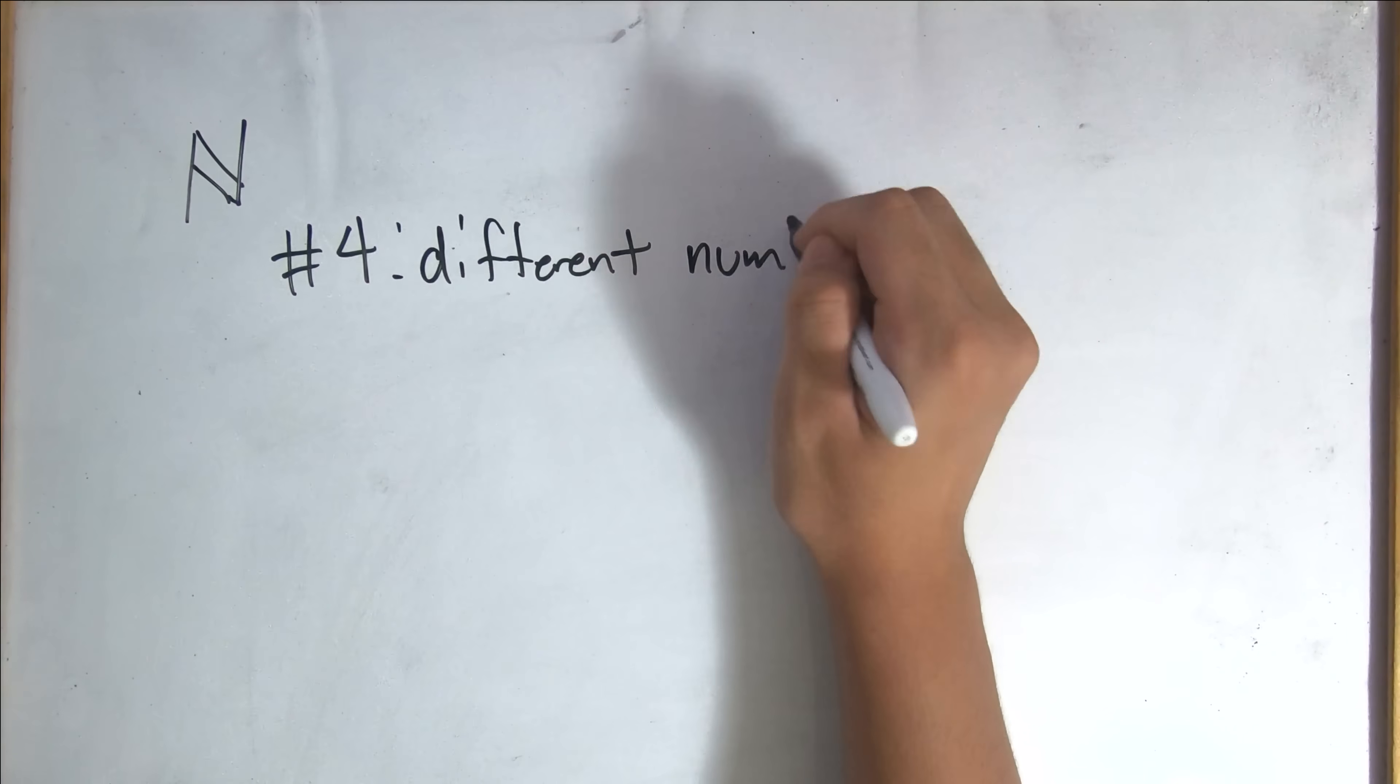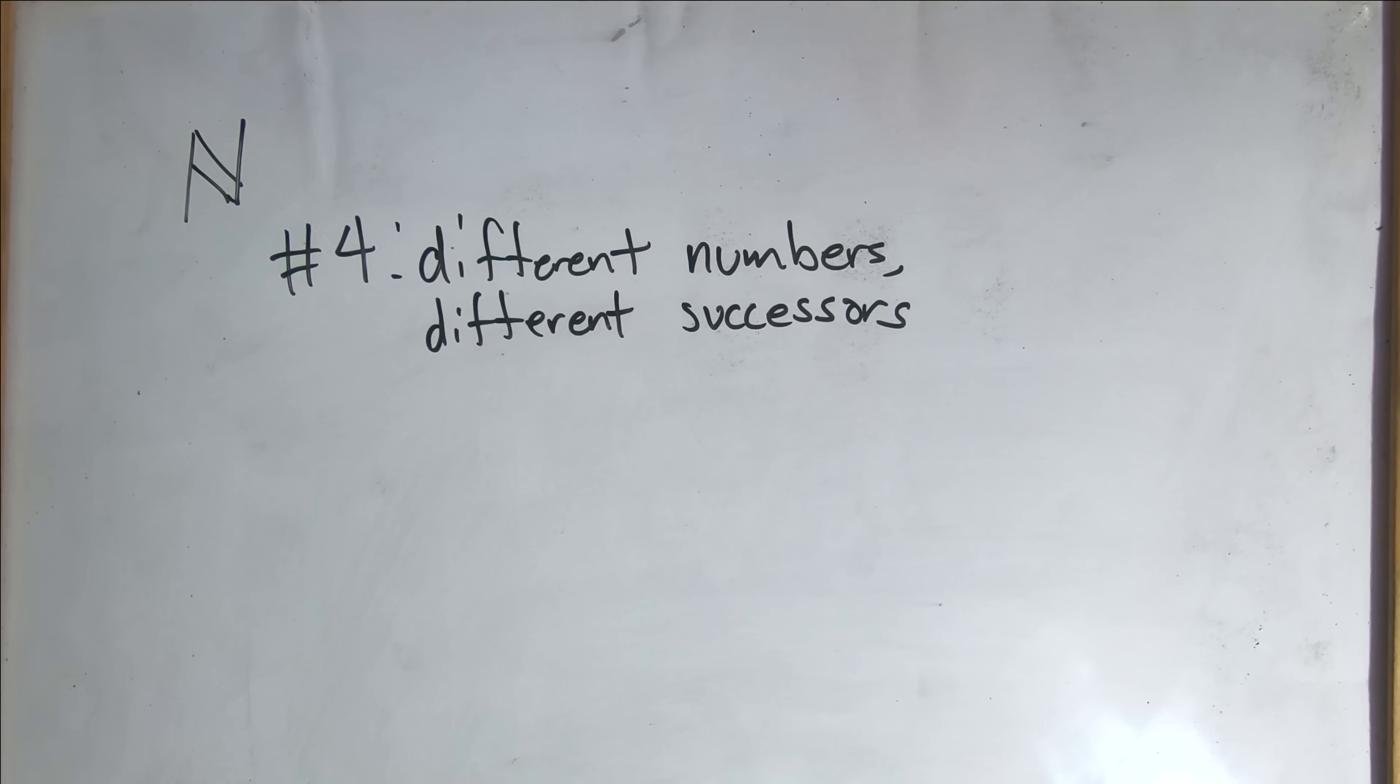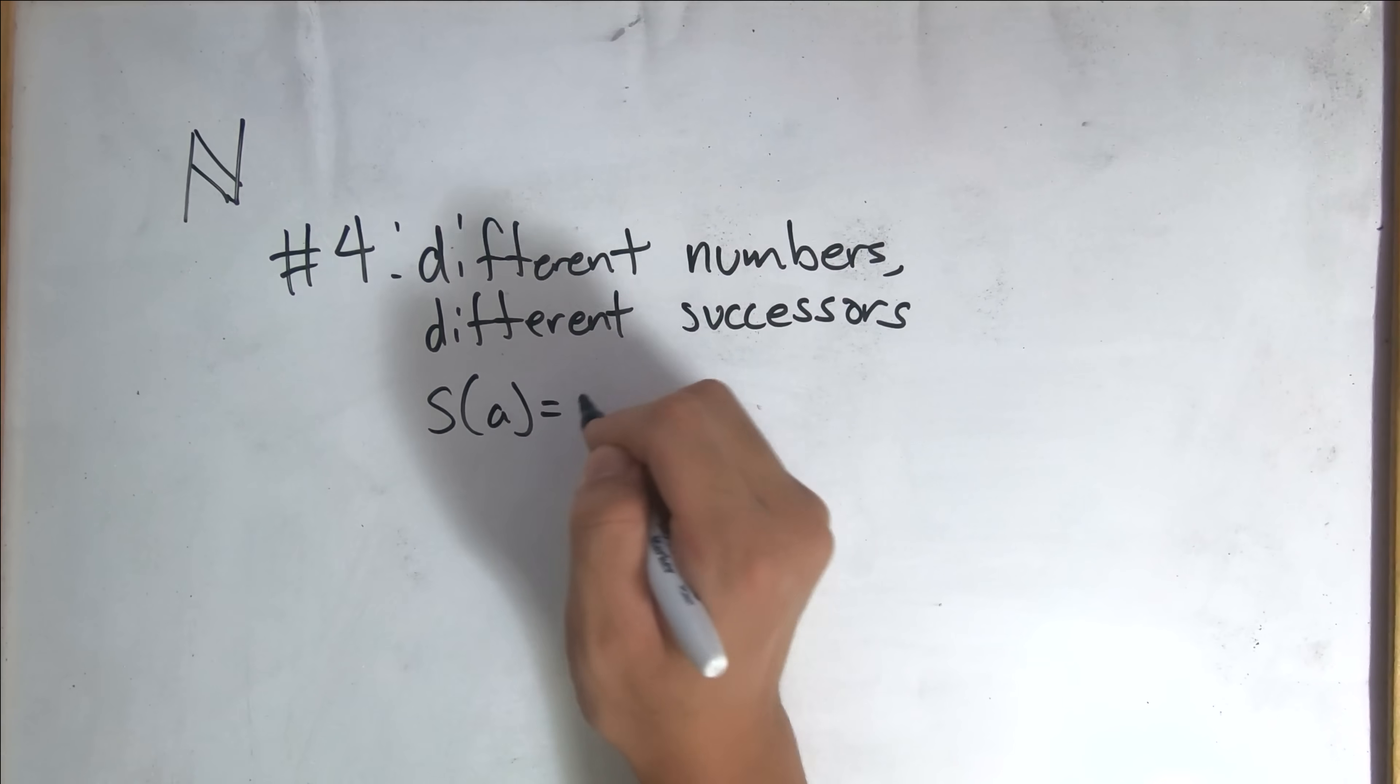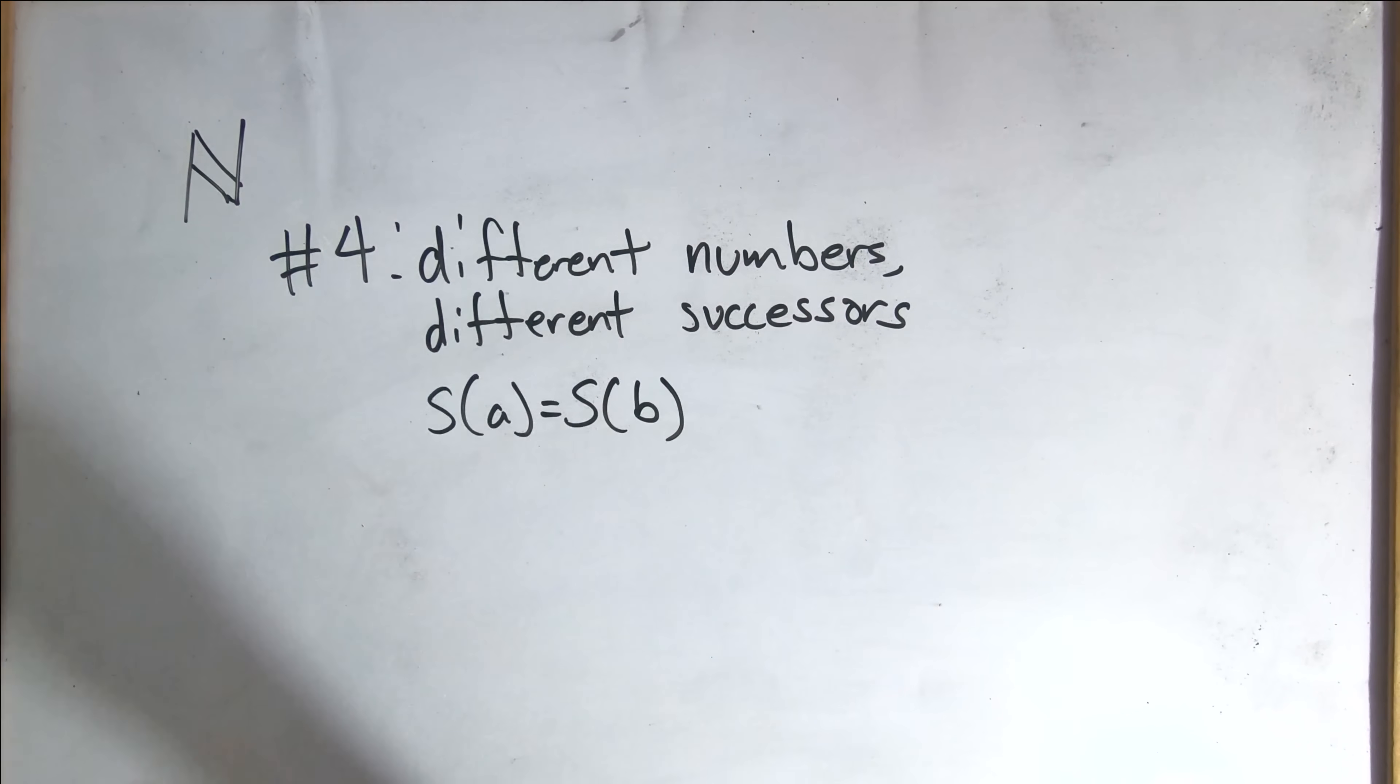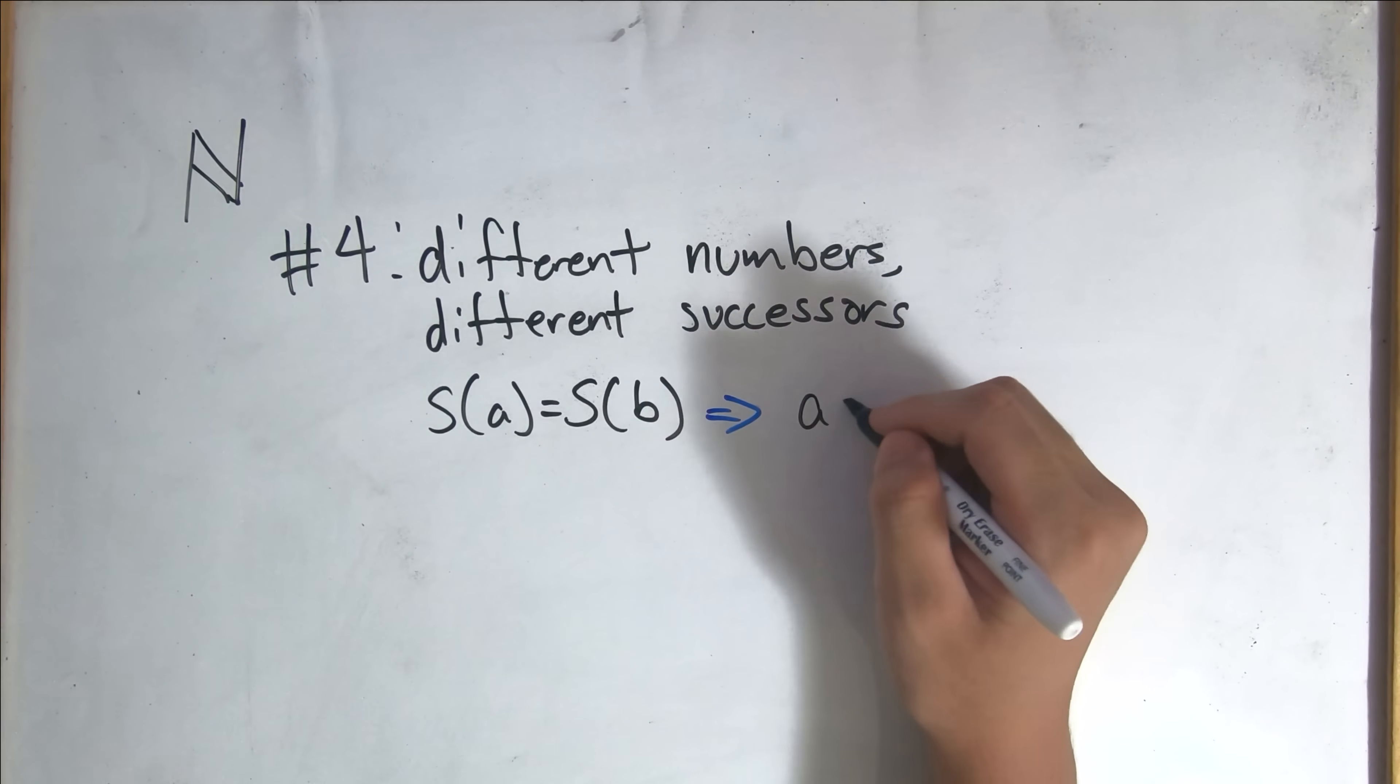Number 4. Different numbers, different successors. In other words, no two numbers have the same successor. If they do, they must be the same number. Mathematically, if the successor of a equals the successor of b, then a must equal b.